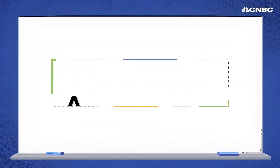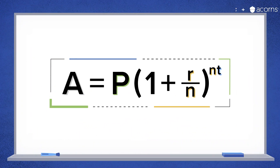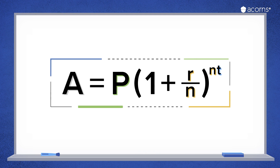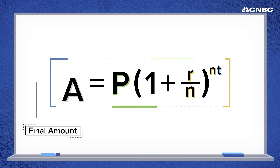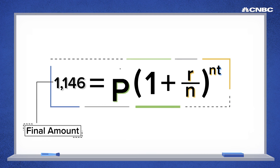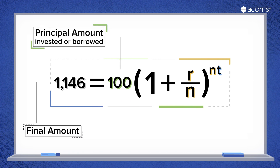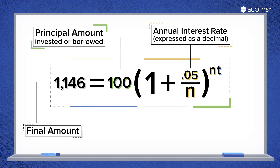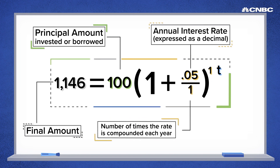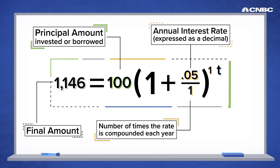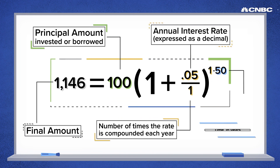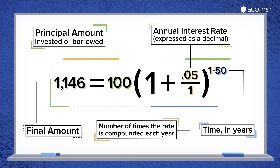For the math sticklers out there, here's the formula behind compound interest: A equals P times 1 plus R over N, to the NT power. A is the final amount you're going to end up with. P is the principal amount, or the initial amount you've invested or borrowed. R is the annual interest rate, expressed as a decimal. N is the number of times that rate is compounded each year. And T is the number of years the money sits in a savings account, or how long the loan lasts.